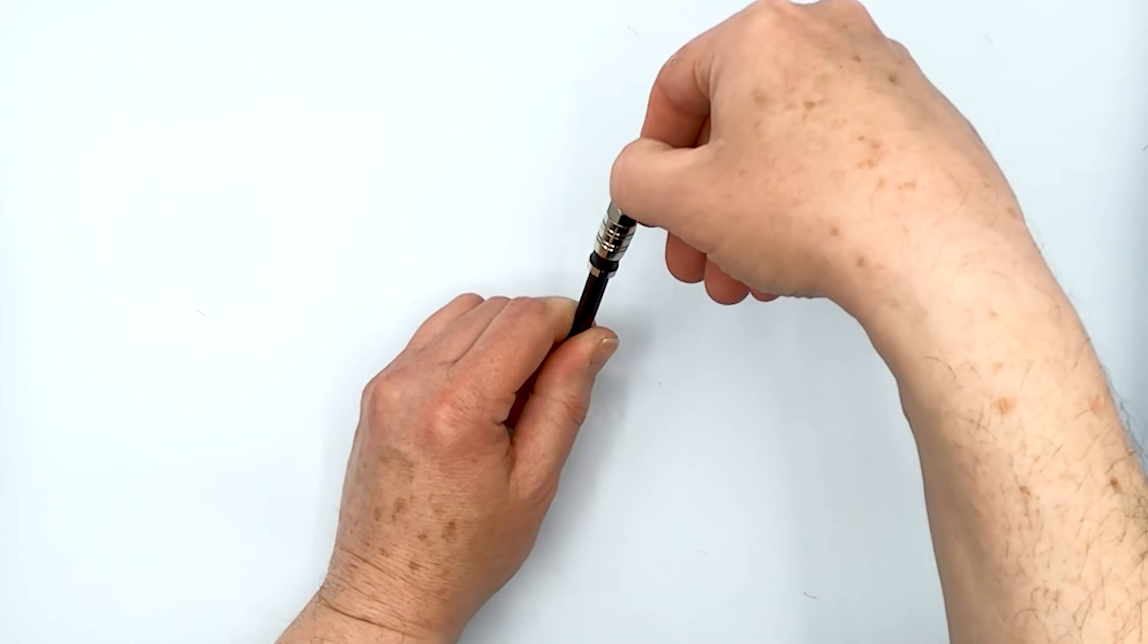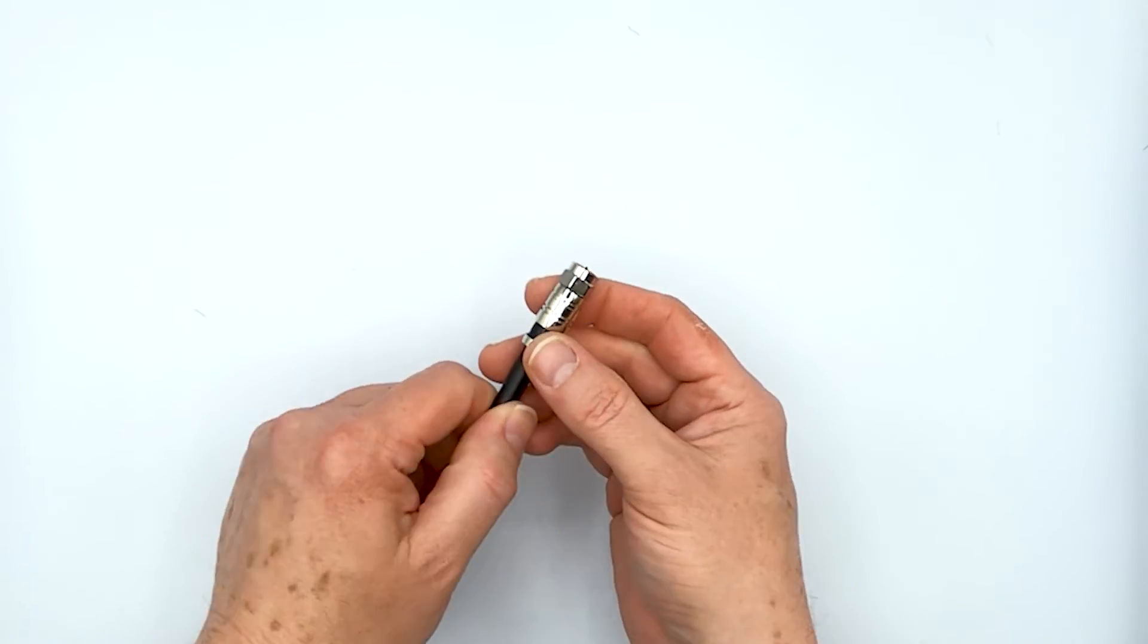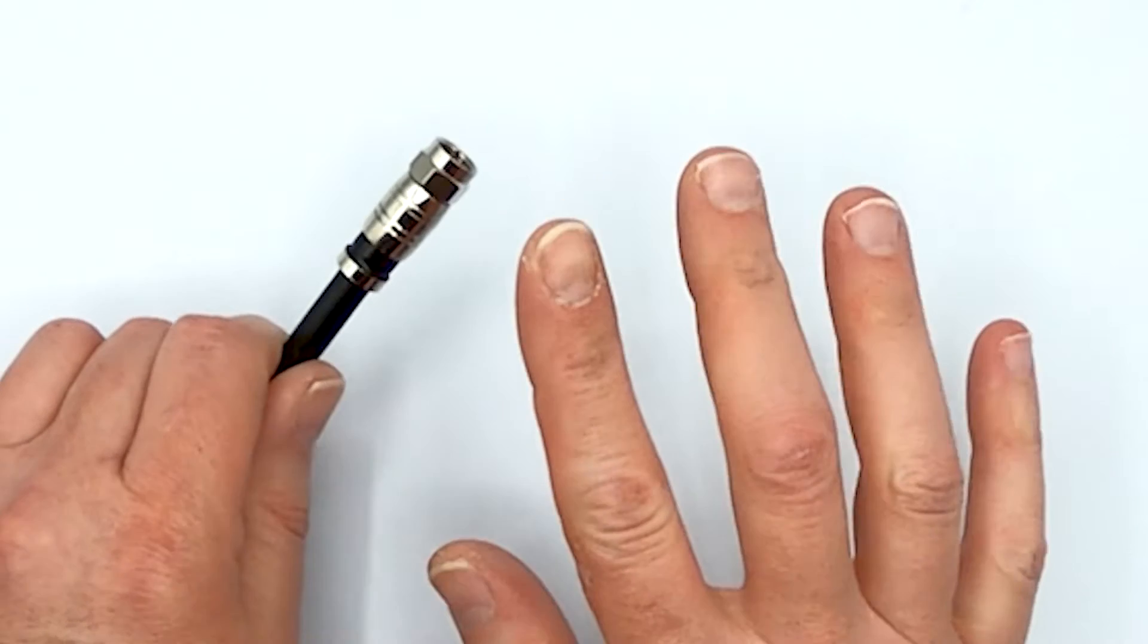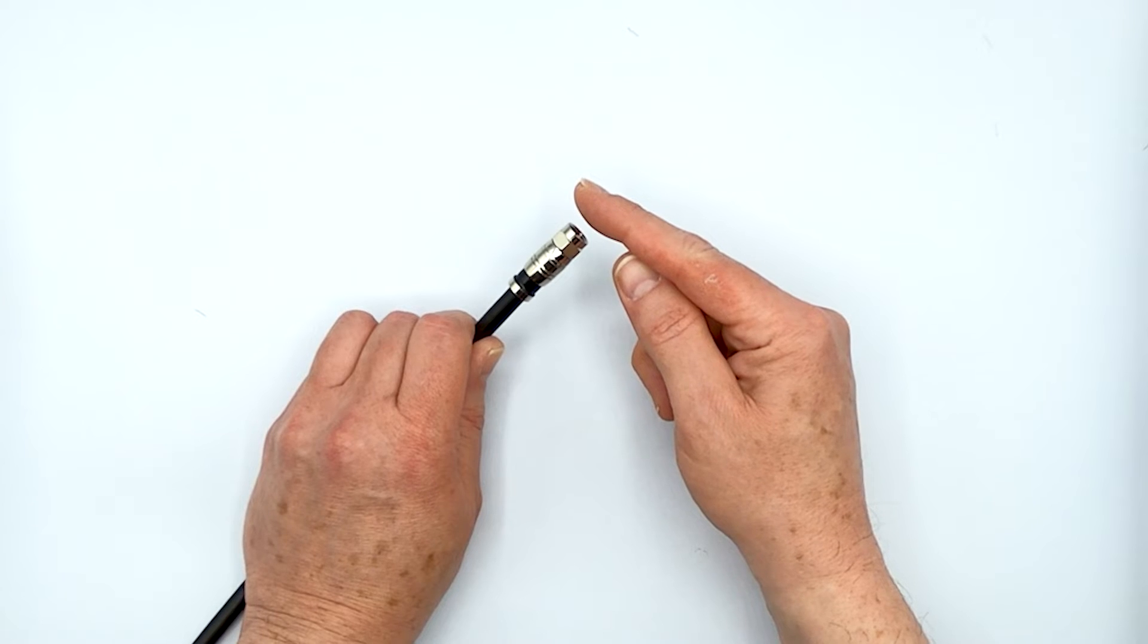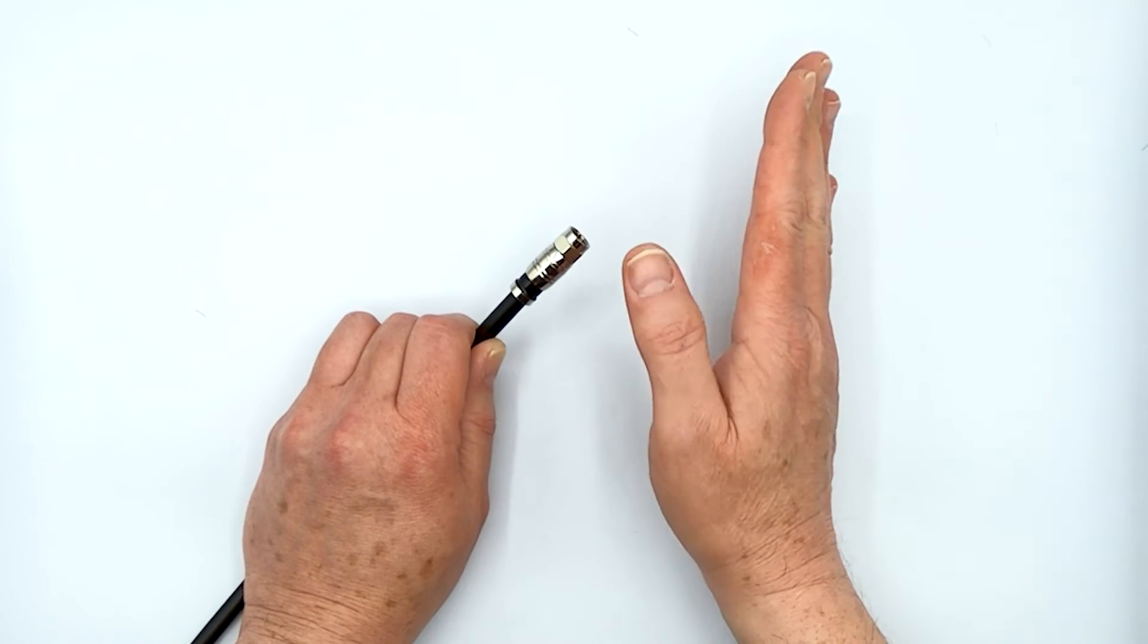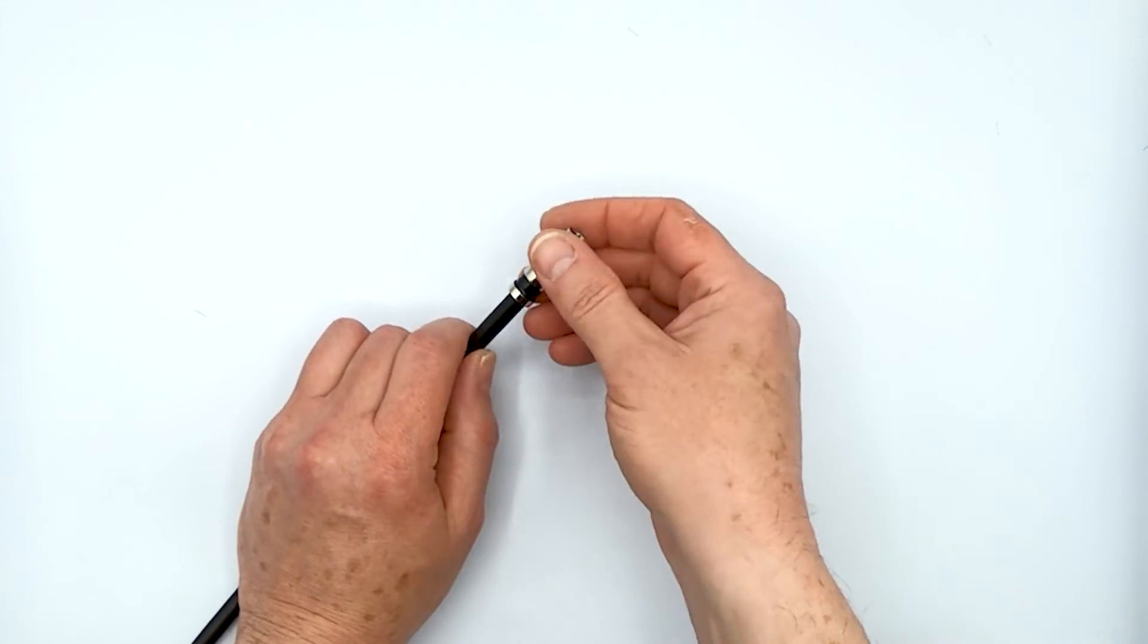And the conductor, the center copper conductor, is maybe sticking about a sixteenth of an inch past the end of the F connector, which is what you want to see. You don't want a long piece of conductor hanging out from the F connector here. Anything more than an eighth of an inch is definitely not good. You might need to actually go in with a flush cutter and nip it so that you get down to a more reasonable length.